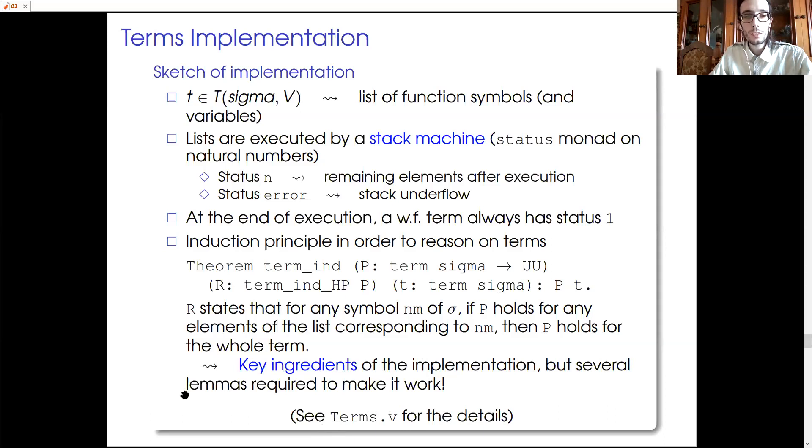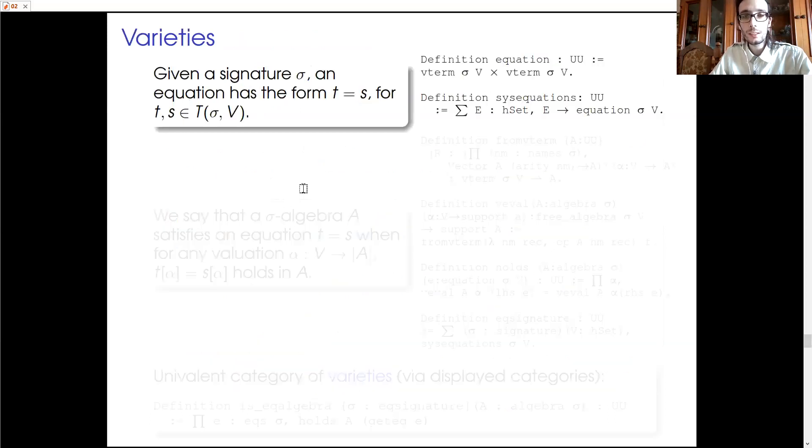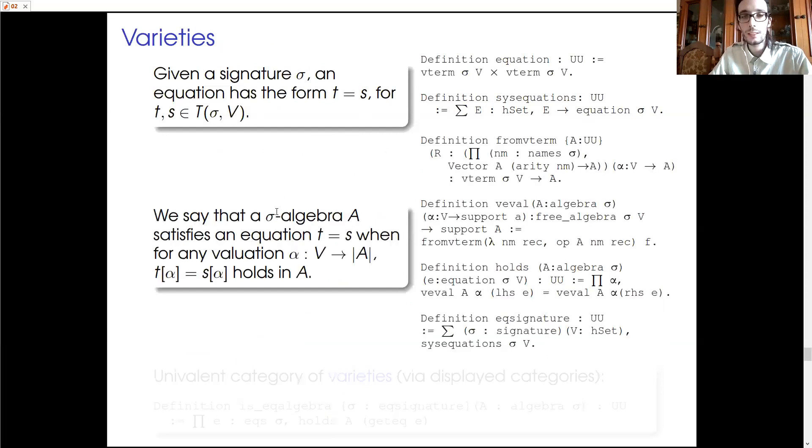But now that we have terms, we also can define an equation to be just a pair of terms over the same set of variables. And we can define a system of equations to be a set of equations over the same set of variables. And we can also say that a σ-algebra A satisfies an equation when no matter how we evaluate the variables in the equation, the corresponding identities hold in A. And here you see that to reach this definition, we need several preliminary steps. Some of them are omitted here.